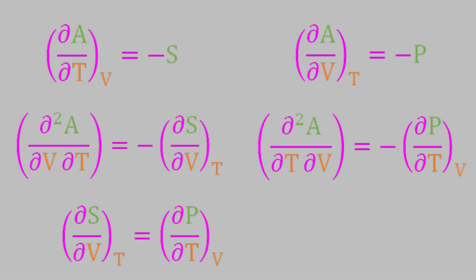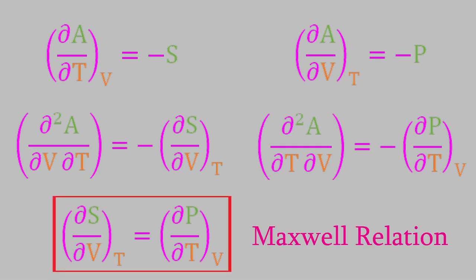So, since the Helmholtz free energy is a continuous function, these two cross derivatives are equal to each other. If we set them equal to each other, we get the equation: the partial of S with respect to V equals the partial of P with respect to T. This kind of equation, which we got by setting the two cross derivatives equal to each other, is called a Maxwell relation. Maxwell relations are a useful way of expressing the connections between properties that are difficult to measure, such as the entropy, and more easily measured properties, like temperature, volume, or pressure.